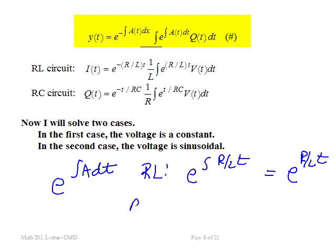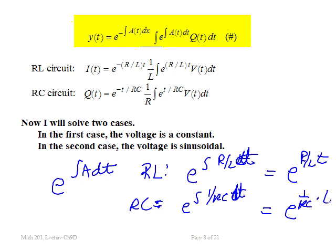For the RC circuit, the integrating factor is E to the integral of 1 over RC dt. Carrying out that integration gives E to the 1 over RC times t. Now you just have an exponential — you can work with that directly.